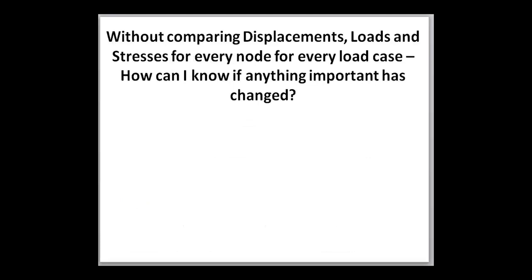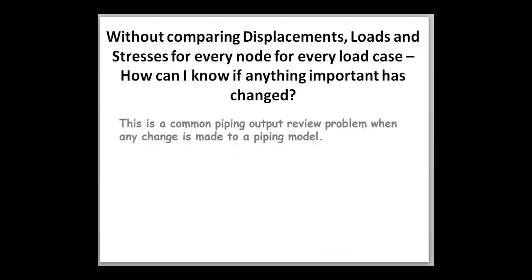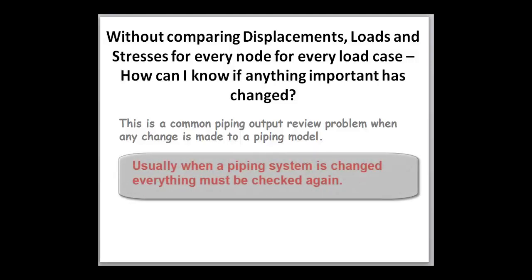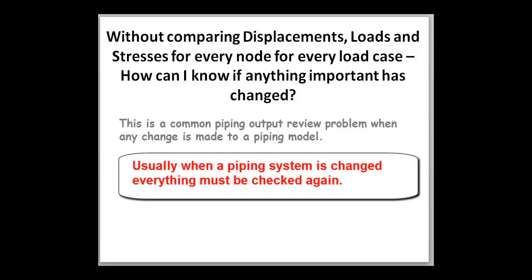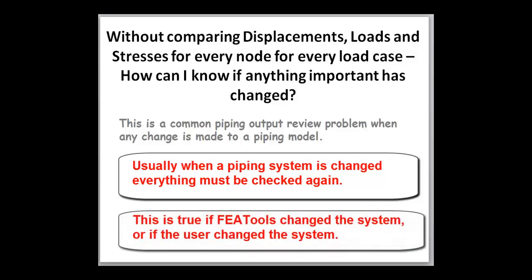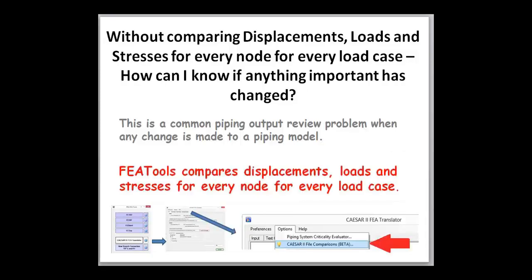Another question we often get asked concerns comparing displacements, loads, and stresses. We're asked if the user has to compare all displacements in all load cases for all nodes to see if anything's changed when new CIFs and Ks are used in the model. As it turns out, this is a common output review problem. The answer is yes — the user must always look at all displacements, all loads, and all stresses for all nodes for all load cases when reviewing any model that's been changed. For complex interacting systems, it's not uncommon for a change at point A to produce changes at points B and C. This can happen when any design changes are made or when flexibilities at tees are added, as is done when we run FEA Tools. Fortunately, FEA Tools has a comparison tool built in to help us solve this model review dilemma.